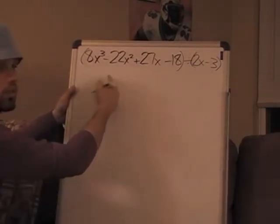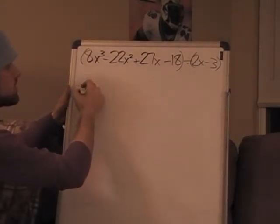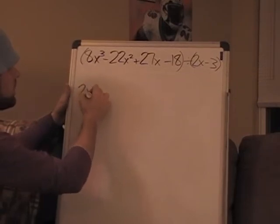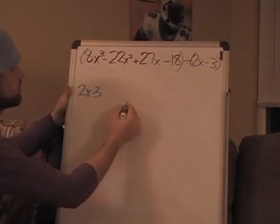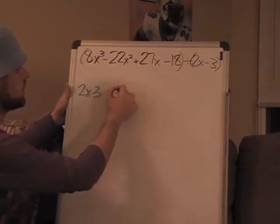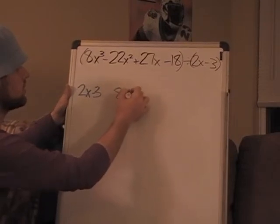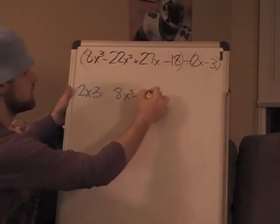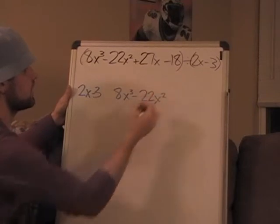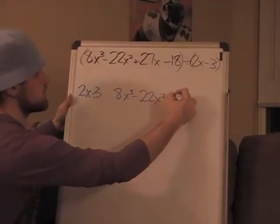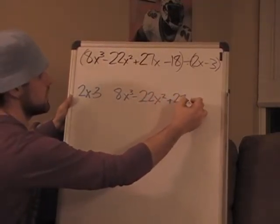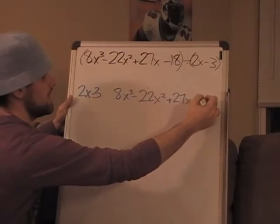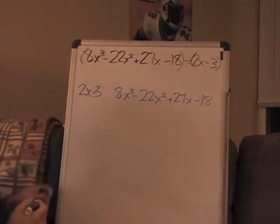Let's follow our steps. Step one was to set up a long division problem, and this is going to be a really long division problem. Let me scoot it all the way over here: 2x minus 3, and now let's do 8x³ minus 22x² plus 27x minus 18.